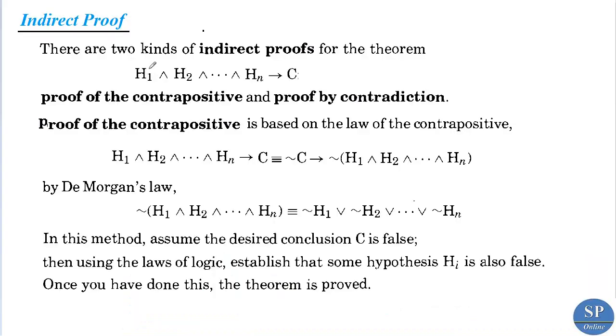There are two kinds of indirect proofs. The first one is proof of the contrapositive and the second one is proof by contradiction.